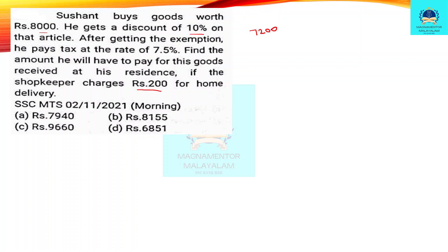After getting the exemption, he pays tax at the rate of 7.5%. So if you pay for goods received at the residence, and the shopkeeper charges 200 for home delivery, then the extra amount will be added. So the total amount he will have to pay includes the discounted price, the tax applied, and the delivery charge.